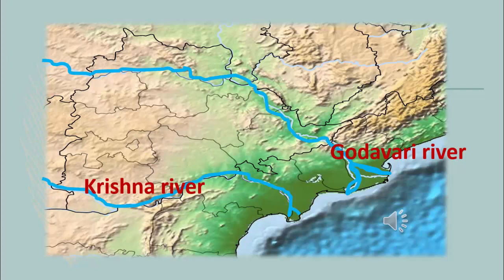Can you see the two triangles formed by these two rivers on the Eastern Coastal Plains? A delta usually forms a triangle. Every year, the floodwater of the river brings decayed leaves and plants with it and deposits them on the flooded areas. In this way, floods enrich the soils of the delta every year.